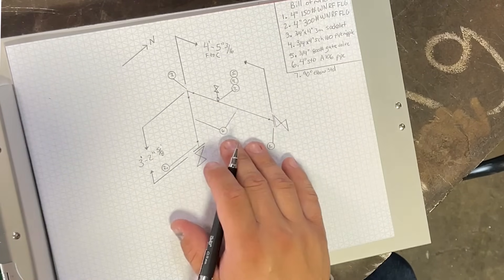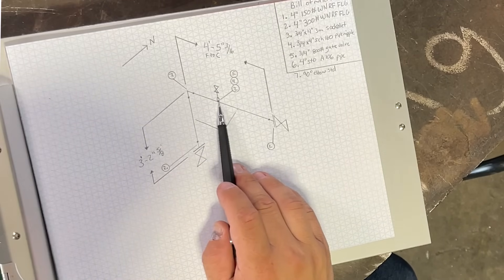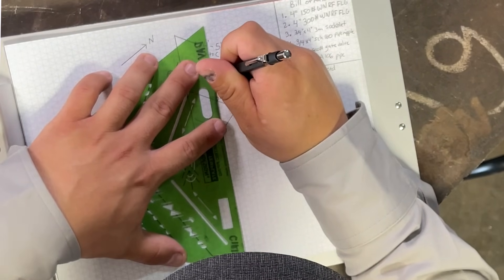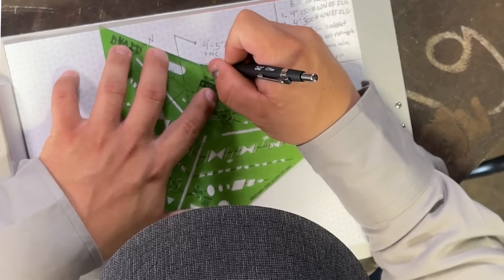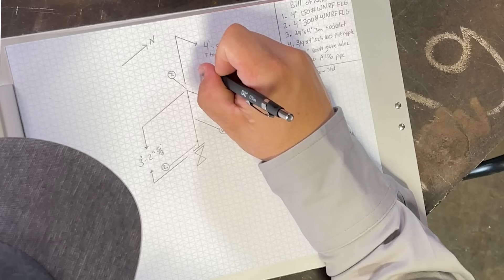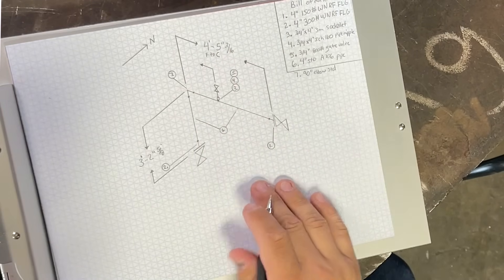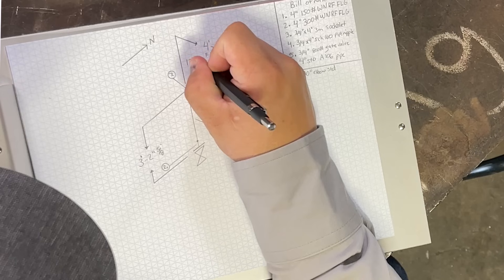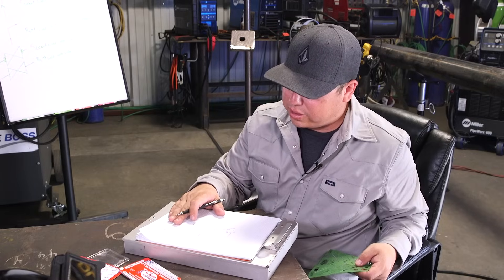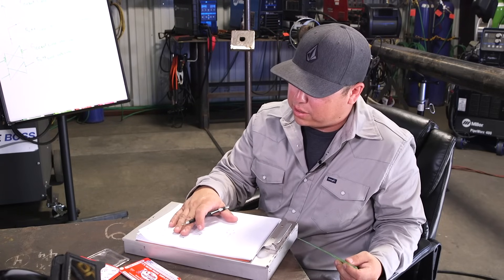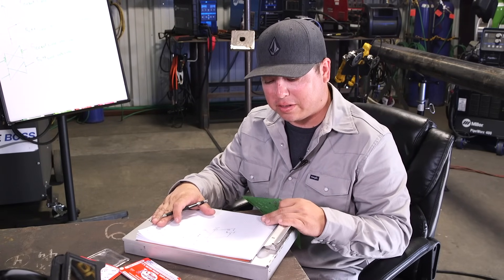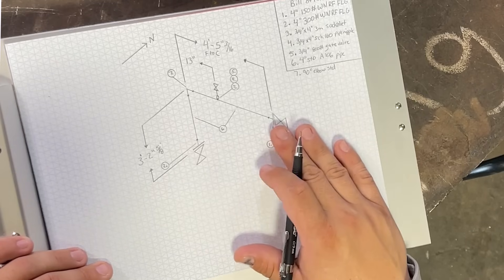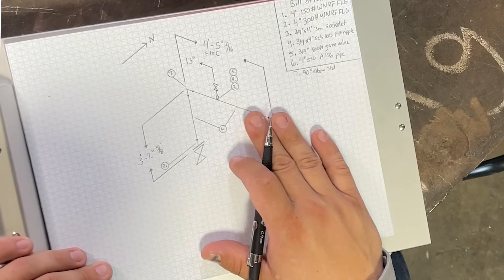So our only dimension here that we're missing is our dimension from center of 90 to our bleeder here. I'm going to draw a line directly over the center of this. And then I'm going to draw a line over with an arrow. And we're going to say that this is 13 inches. You can see guys, this is a very simple drawing. Of course, it is not perfect. It does not look like an engineering computer drawing. But all the information is there for us to be able to look at this drawing and be able to build our spool.